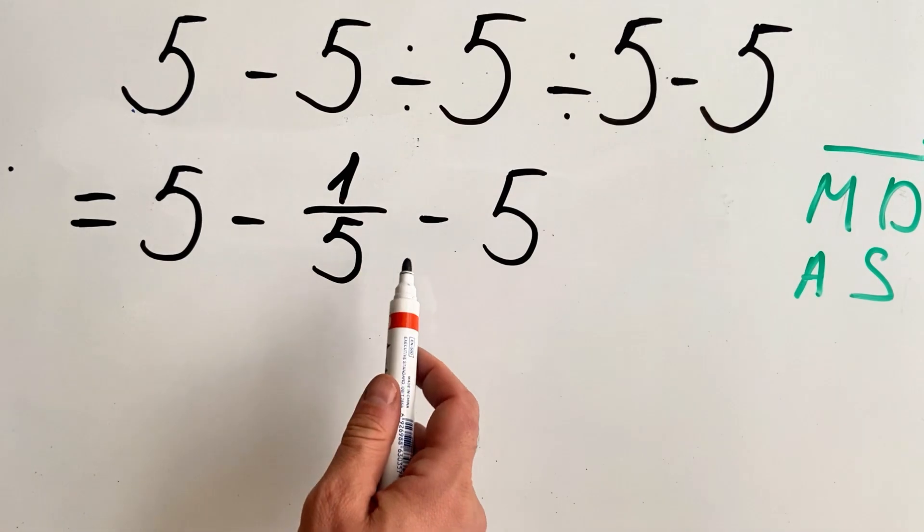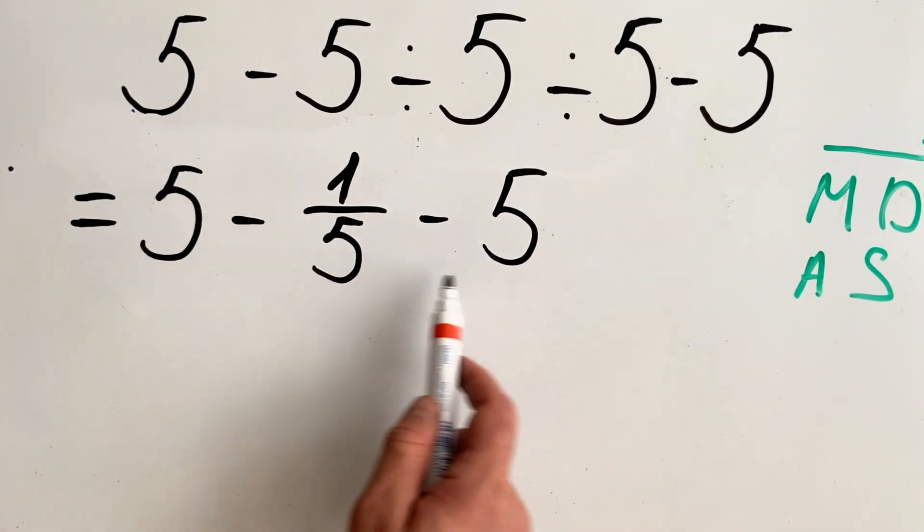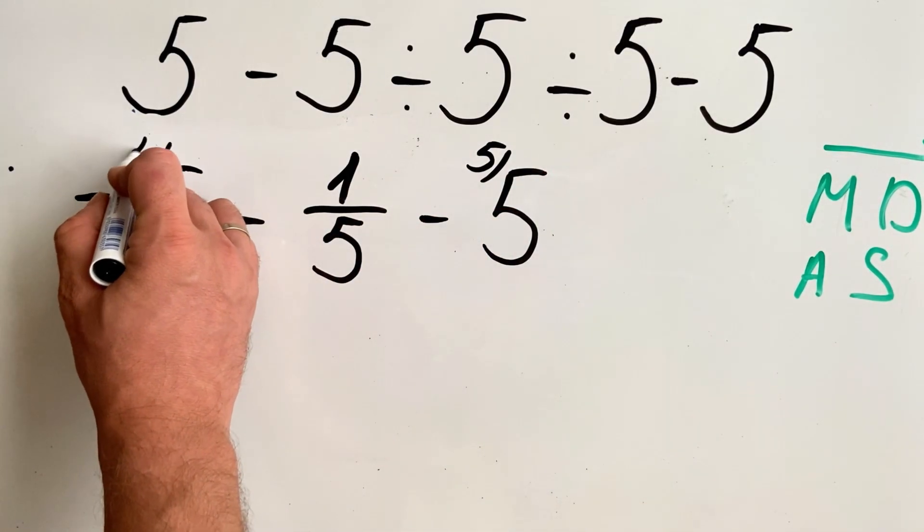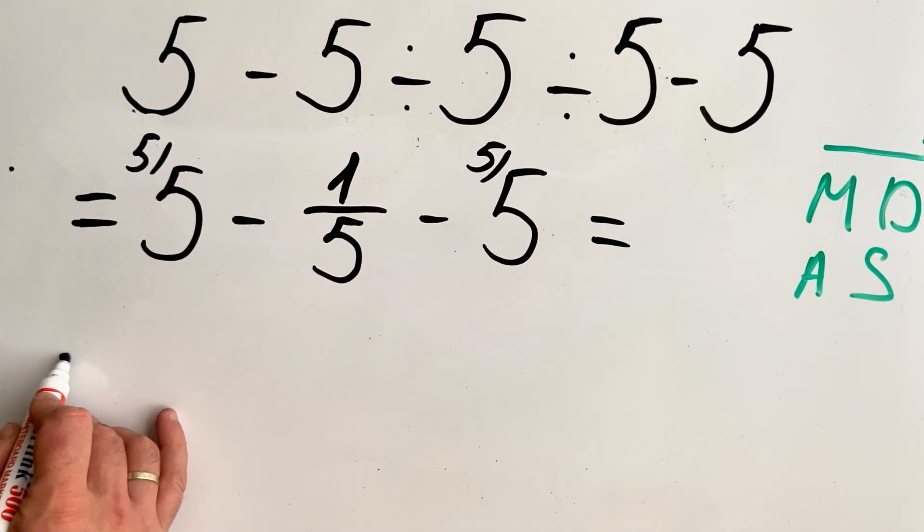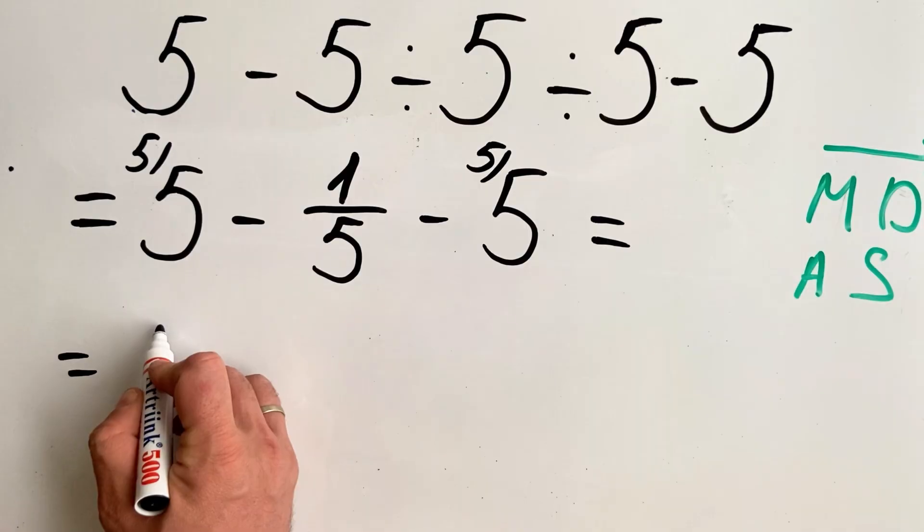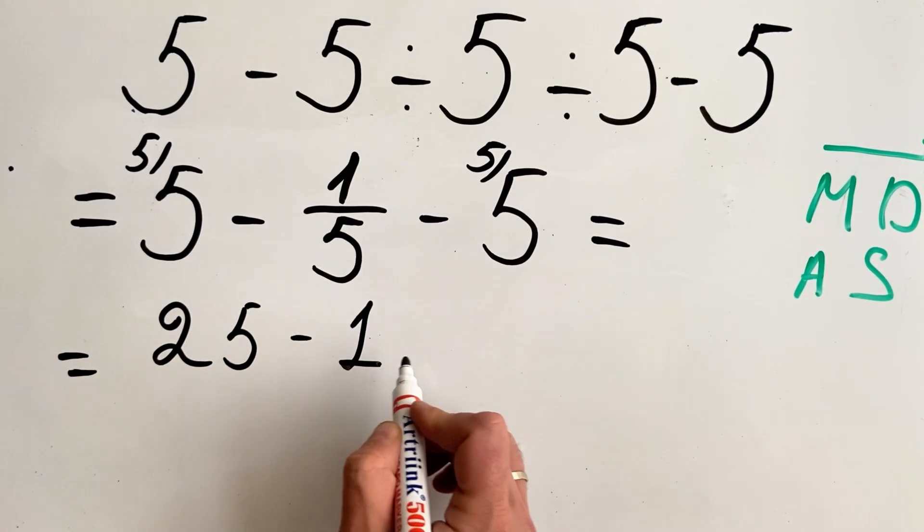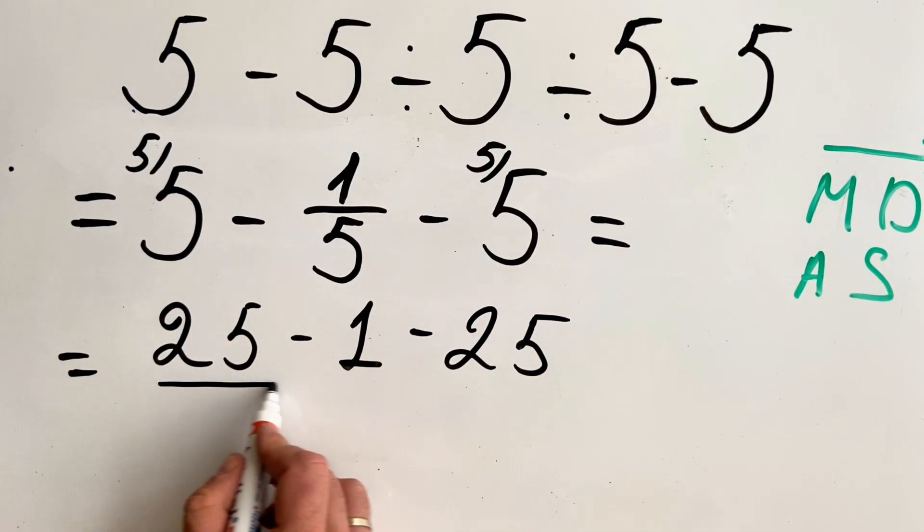In this case, we need to have one common denominator, which is 5. So we multiply each of the numbers by 5. So we get 25 minus 1 minus 25 all over 5.